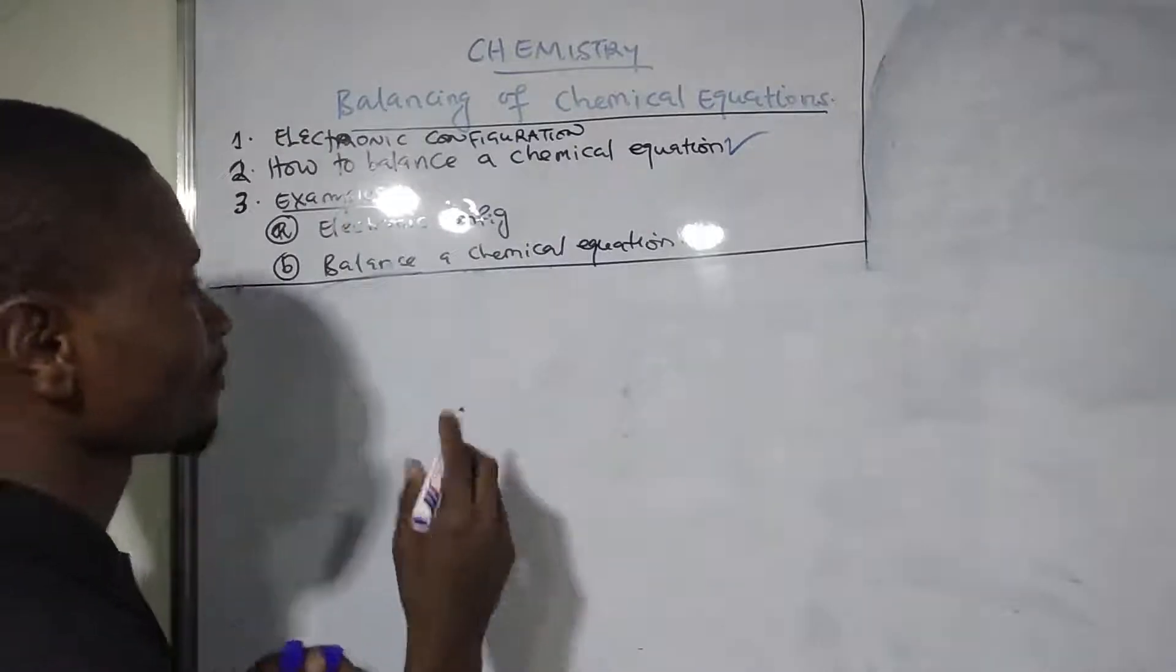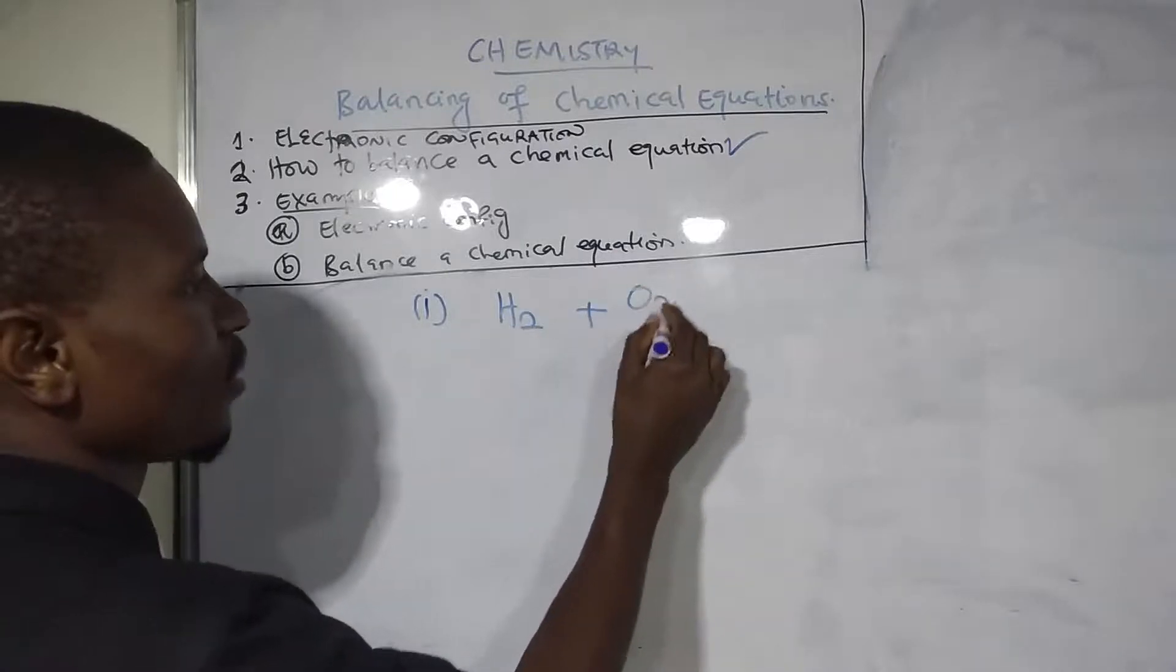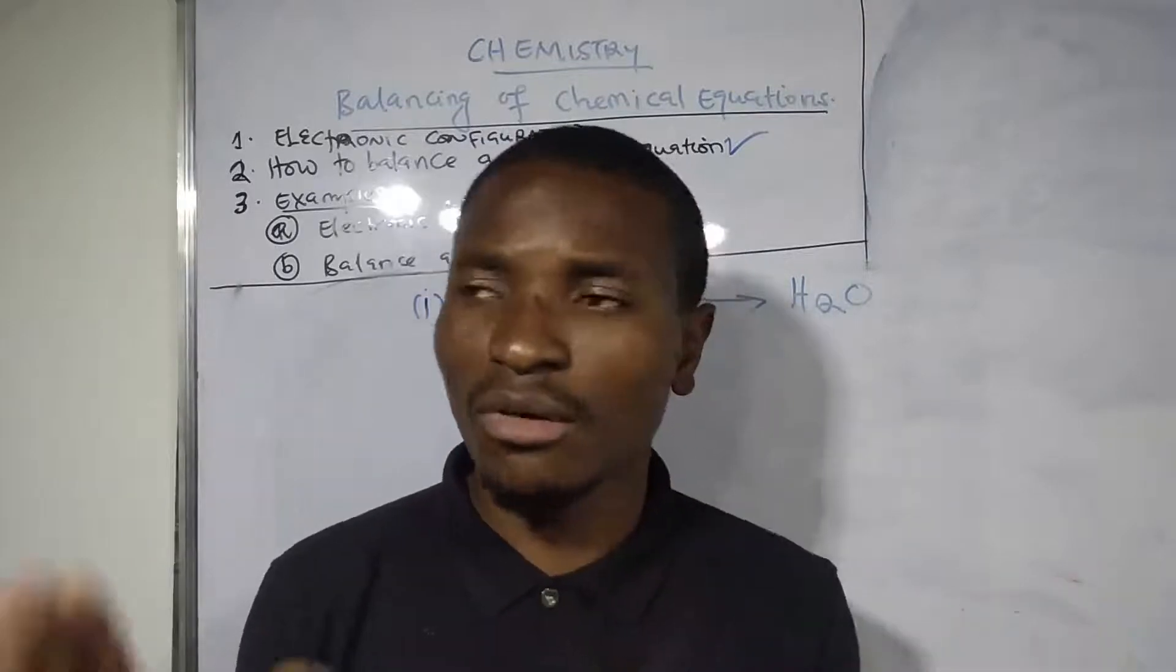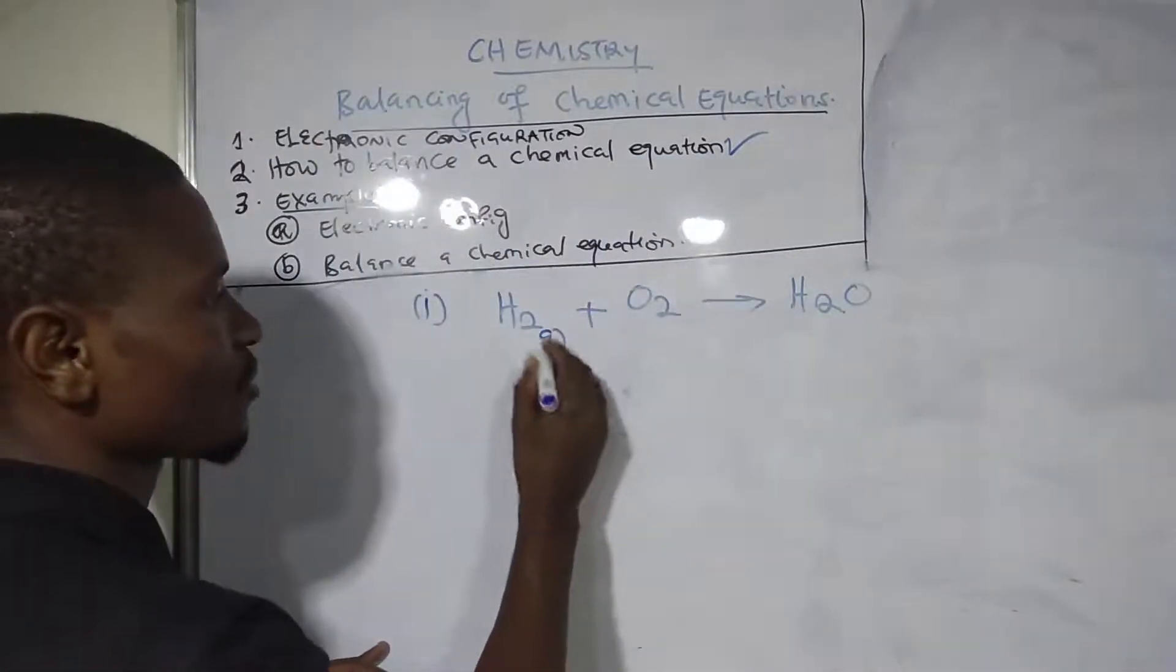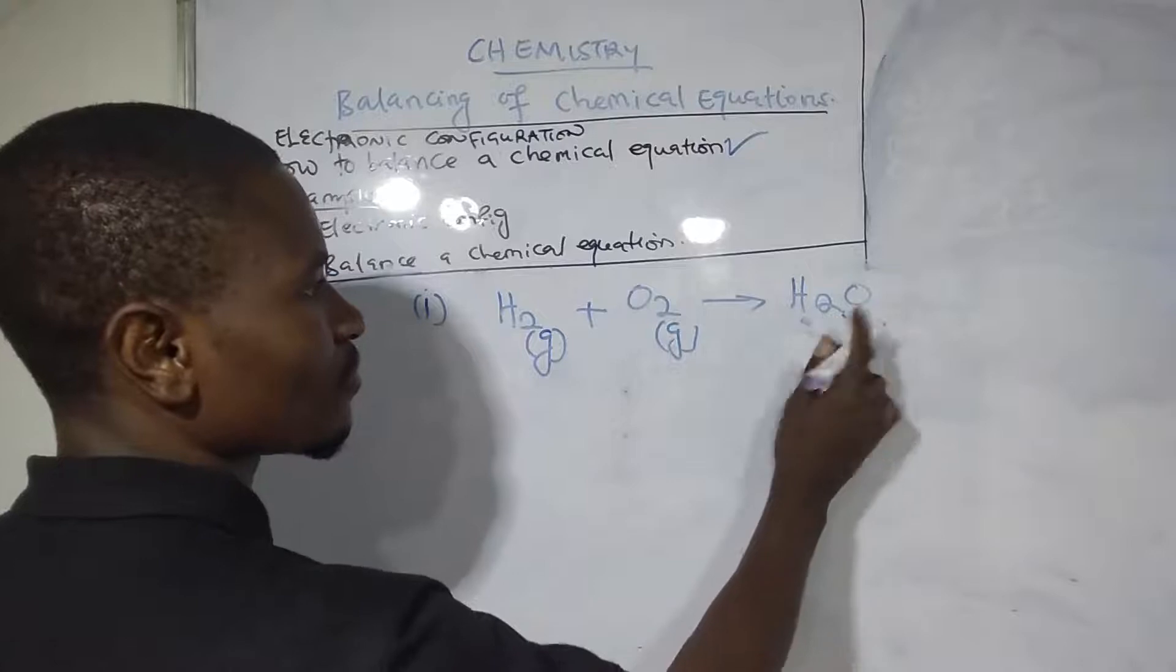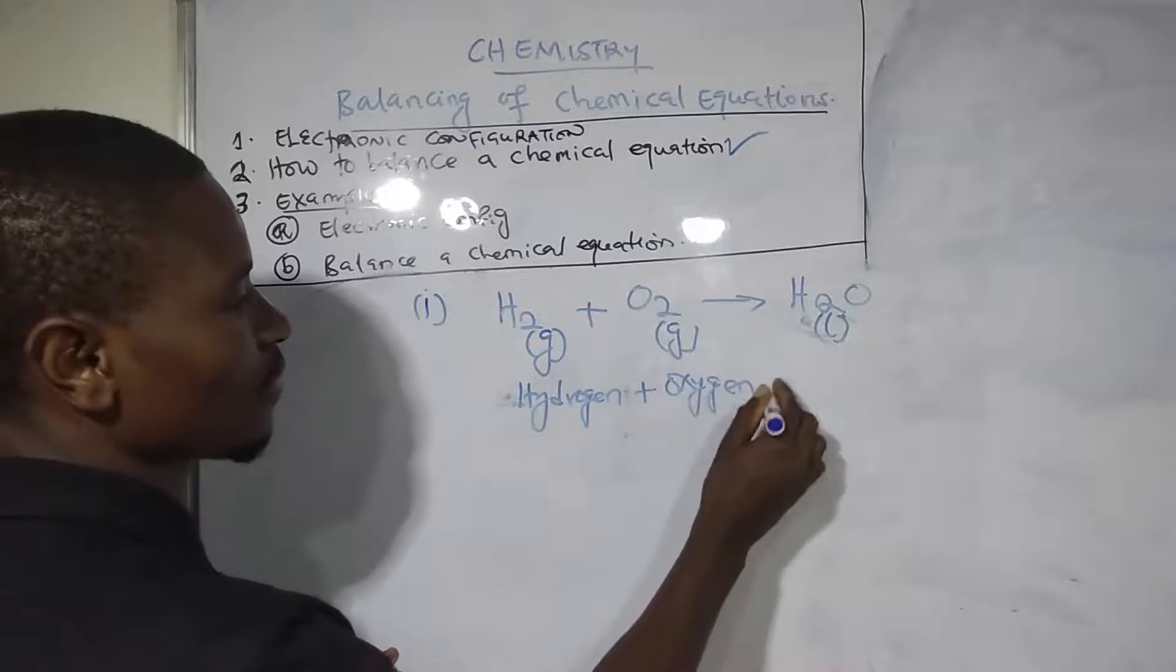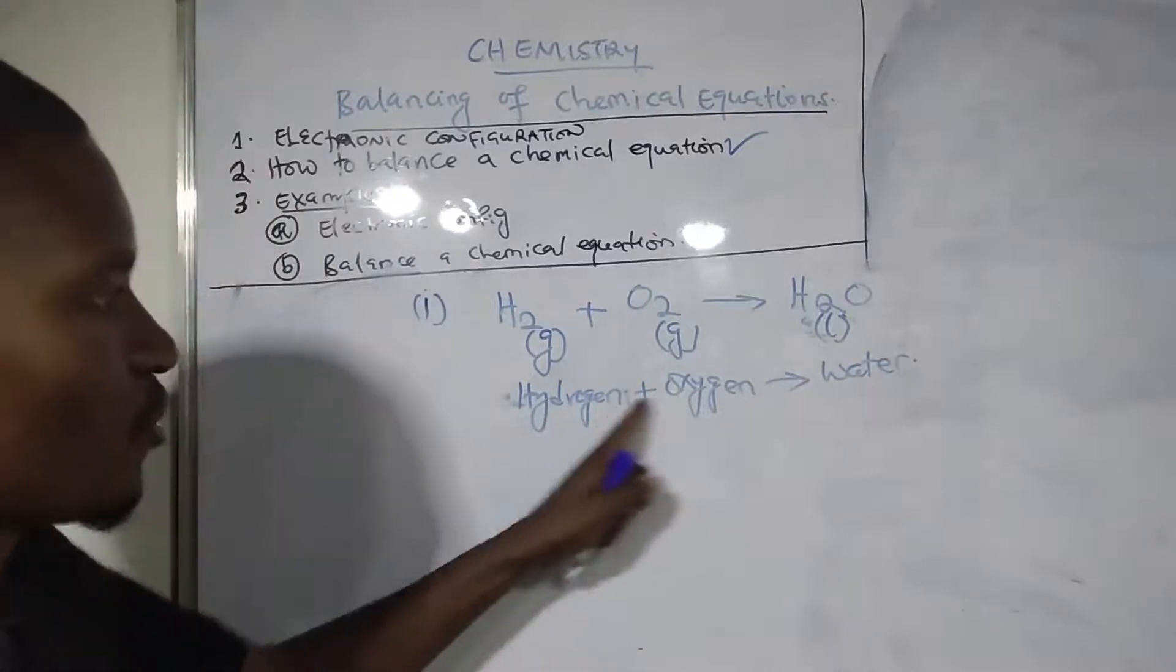I'll start with a simple one: hydrogen plus oxygen produces water. Whenever you're writing a balanced chemical equation, make sure to include the state symbol of each element or atom involved in the reaction. Hydrogen is a gas, oxygen is a gas, and water is a liquid.